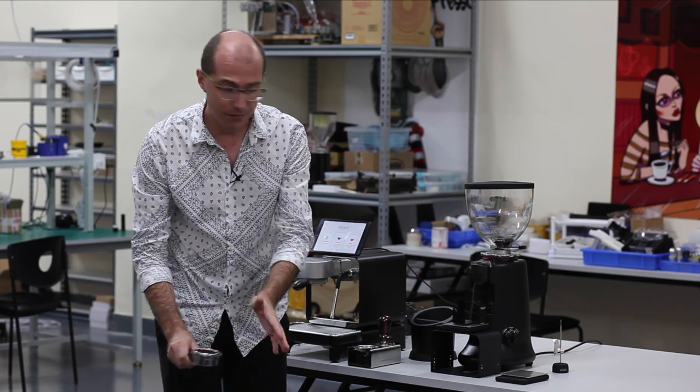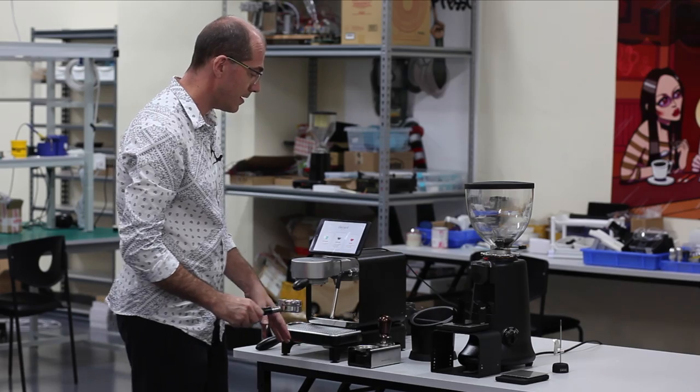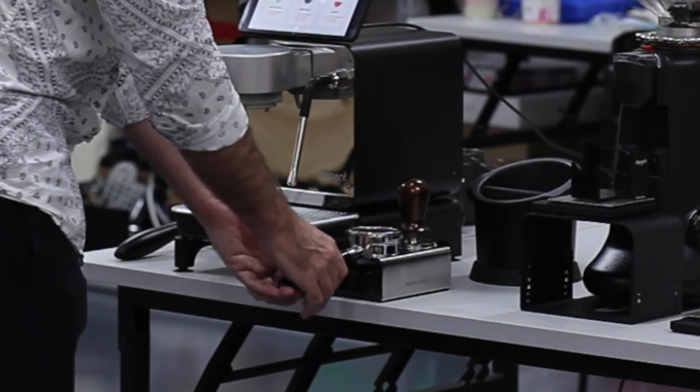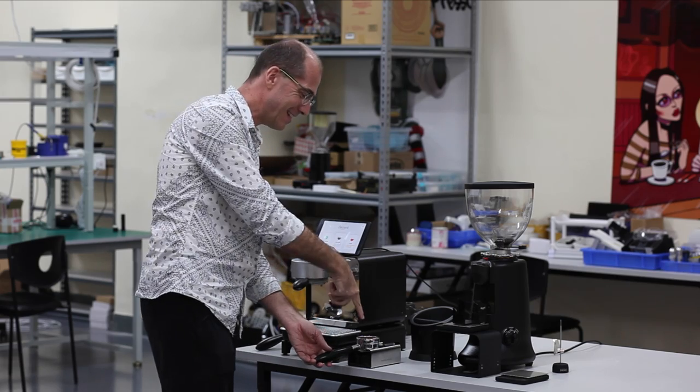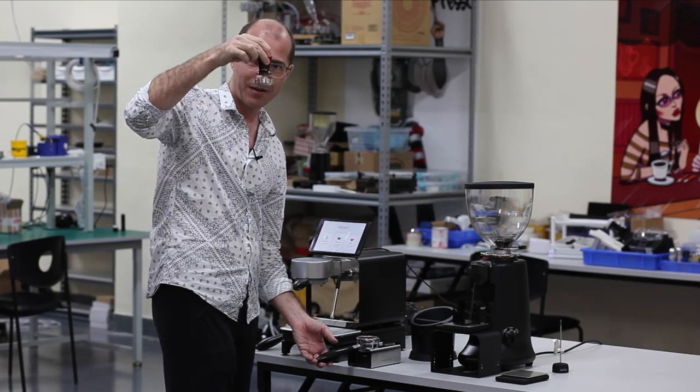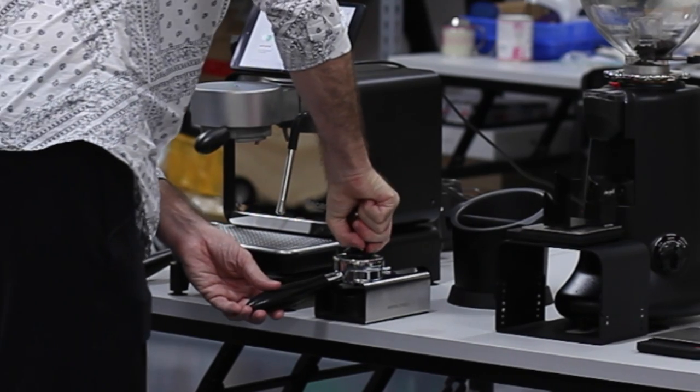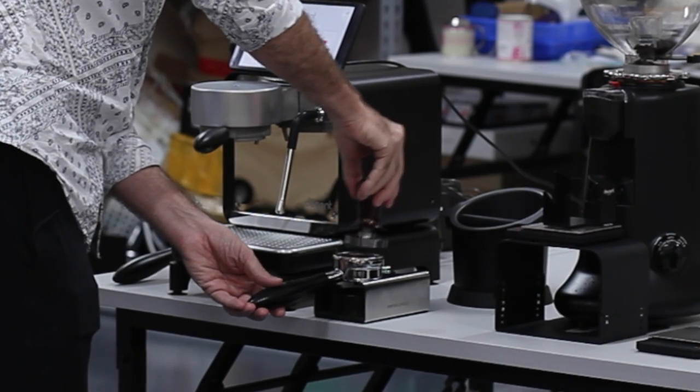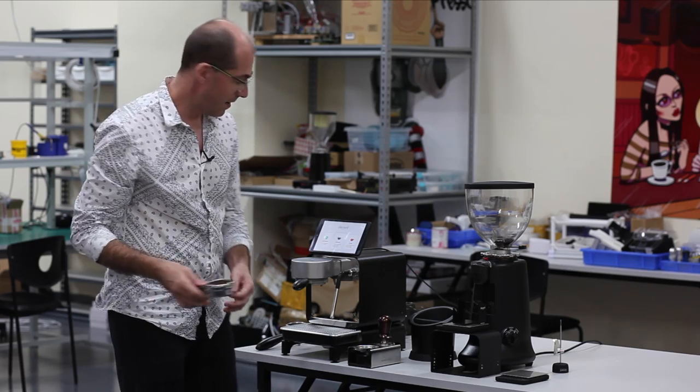Now it needs to get compacted which is called tamping. This here is our tamping cradle which we also sell to make it easy. So you put it there. This is our tamper which is made to fit inside our baskets and it fits very precisely and straight up and down. It also has a spring so it tamps exactly the right amount. So I tamp like so, lift it up, put that back and now I've got a coffee puck that's ready to be made.